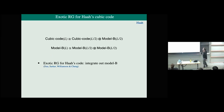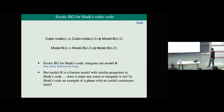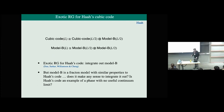Model B is some other fractal model very similar to the cubic code. It has been explored, and it's certainly useful to integrate out model B to make the cubic code into an RG fixed point. However, that seems like a weird thing to do, because model B is a fractal model with very similar properties to Haas's code — why would we integrate it out but not integrate out Haas's code? They seem very similar. This made me in the past very pessimistic about Haas's code, suspecting it may be an example of a phase without any useful continuum limit.